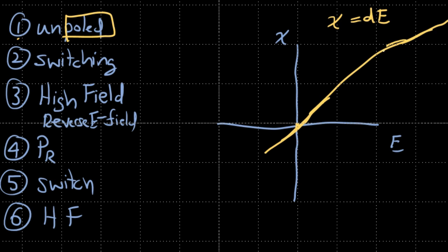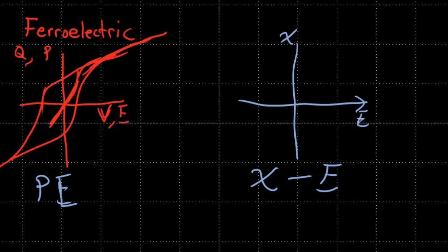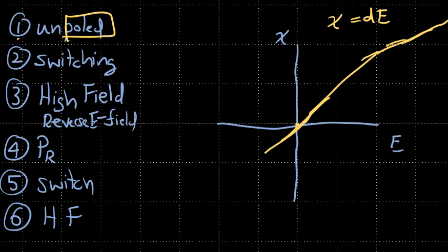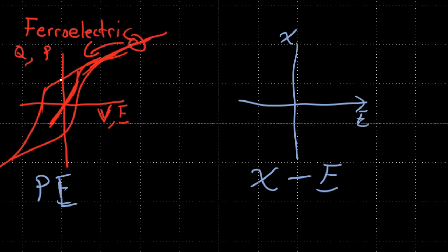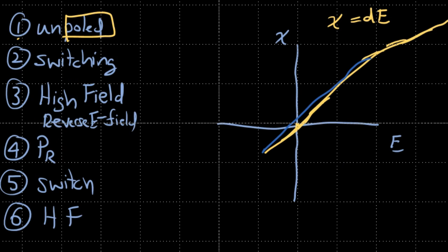As we return and reverse the electric field, similarly to how we saturated at the positive high field, we climb back down this path. We're going back down, but we are going really far into the negative field. Remember, this is the polled material — a polled material starts at a certain strain, went up, and now we're reversing. As we keep going back, things are going to switch. On the strain vs. electric field curve, when switching occurs, this happens.